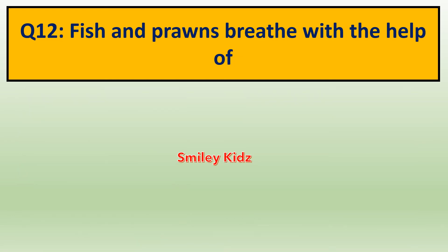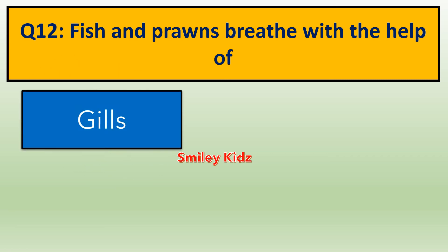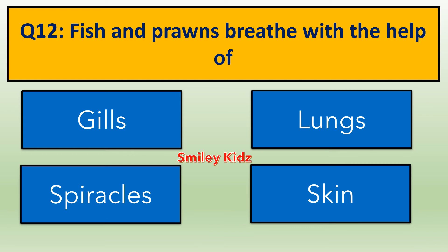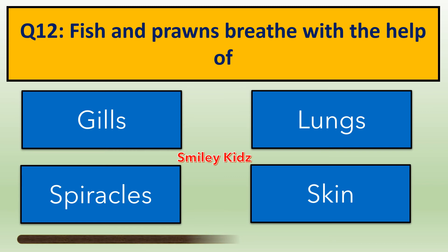Question number 12. Fish and Prawns breathe with the help of — options are: A. Gills, B. Lungs, C. Spiracles, D. Skin. Your time starts now. The right answer is Gills. Fish and Prawns breathe with the help of gills.